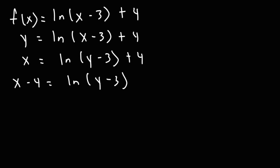Once we get to this point, we need to change it from logarithmic form to exponential form. But right now we don't see a base. When dealing with natural logs, it's understood that the base is the letter e. e is a number which is approximately 2.718, and you would treat it as any constant. So we're going to start with the base e and raise it to the stuff across the equal sign. e raised to the x minus 4 is going to equal the stuff inside of the natural log function — in this case, y minus 3.